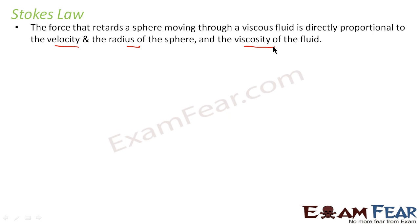Whenever I talk of a viscous fluid, the best example you can think of is honey. However, all the fluids that we see around us have some viscosity. But when you think of a viscous fluid, we tend to think of honey because the coefficient of viscosity for honey is quite high. So if there is an object which moves through a viscous fluid, the force that retards the sphere — due to the property of viscosity — will cause a retardation. There will be a force which will try to stop the motion of the object.